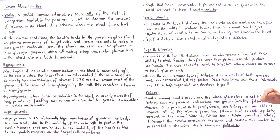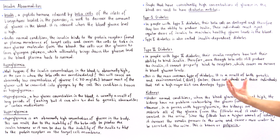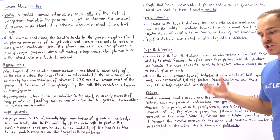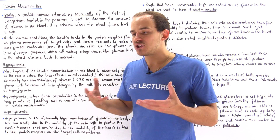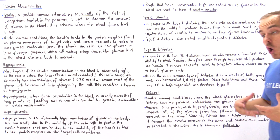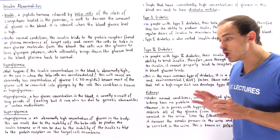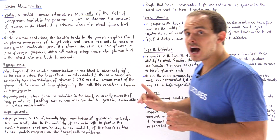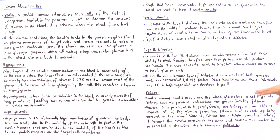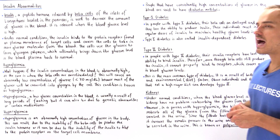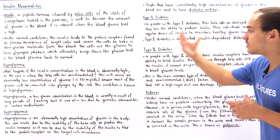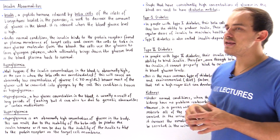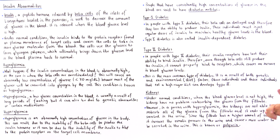Type 2 diabetes is the more common form and results from both genetics and environmental factors. Environmental factors include the type of diet followed — being obese, overweight, or following a diet very high in sugar increases the chance of developing type 2 diabetes. This is exactly why type 2 diabetes is much more common than type 1 diabetes.